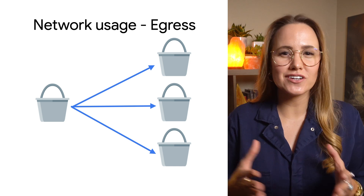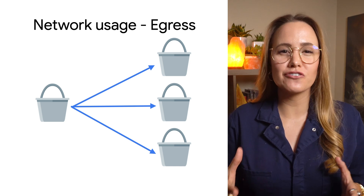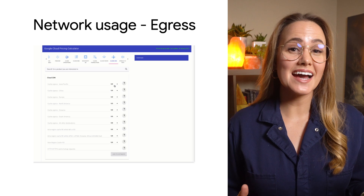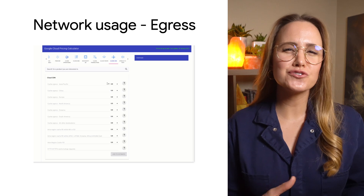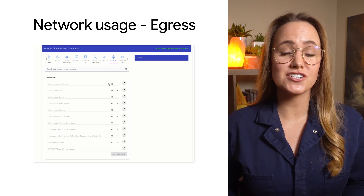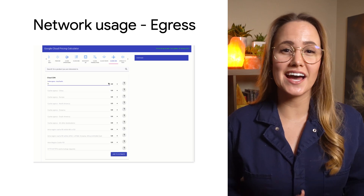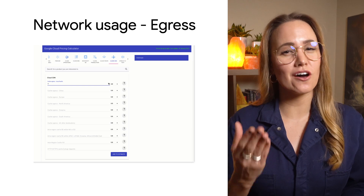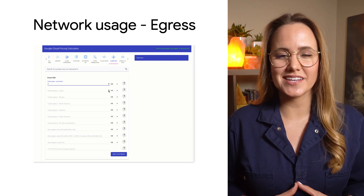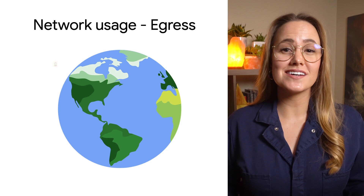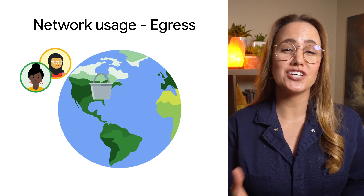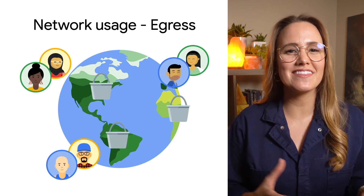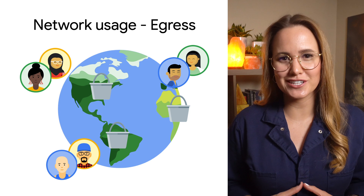Pricing then applies for egress between regions or across continents. Second, if you use certain Google Cloud network products, such as Cloud CDN or Cloud Interconnect, egress pricing is based on their pricing tables. All other egress is considered to be general network usage and is billed based upon which continent the data is traveling to.